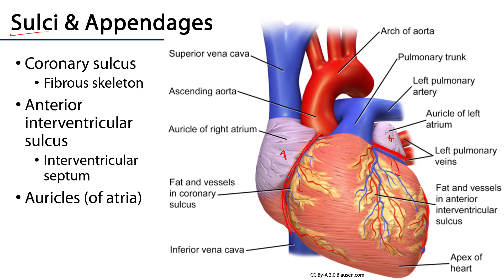We also have interventricular sulci. Here is an example of the anterior interventricular sulcus, and we can see that both in the coronary sulcus and the anterior interventricular sulcus there are coronary arteries and their branches, cardiac veins and their tributaries.